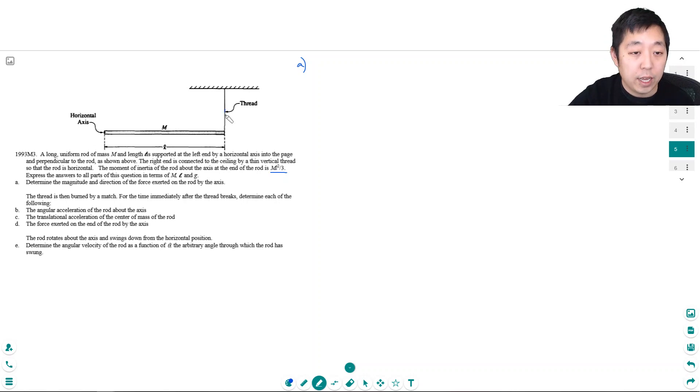So let's do a free body diagram. I have tension from this thread, I have force of gravity here at the center of the rod because it's uniform, it's always at the center. And then this thing is going to have a force either up or down. Let's just assume it's up. I don't actually know which way the force is, but we'll call this the normal force for lack of a better word.